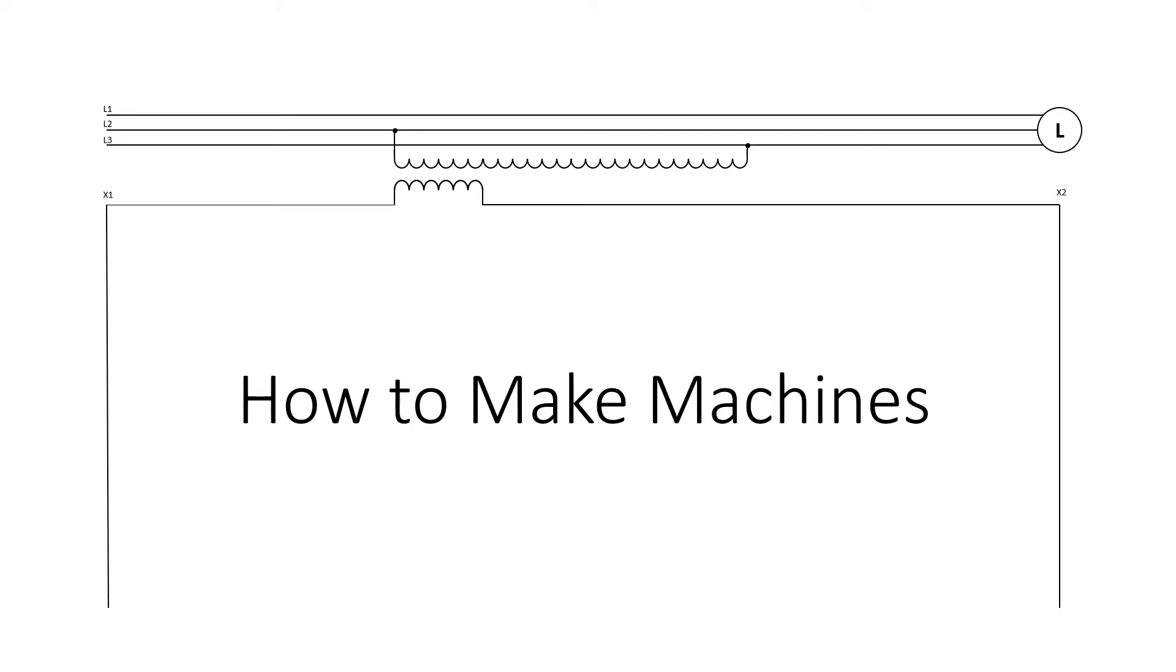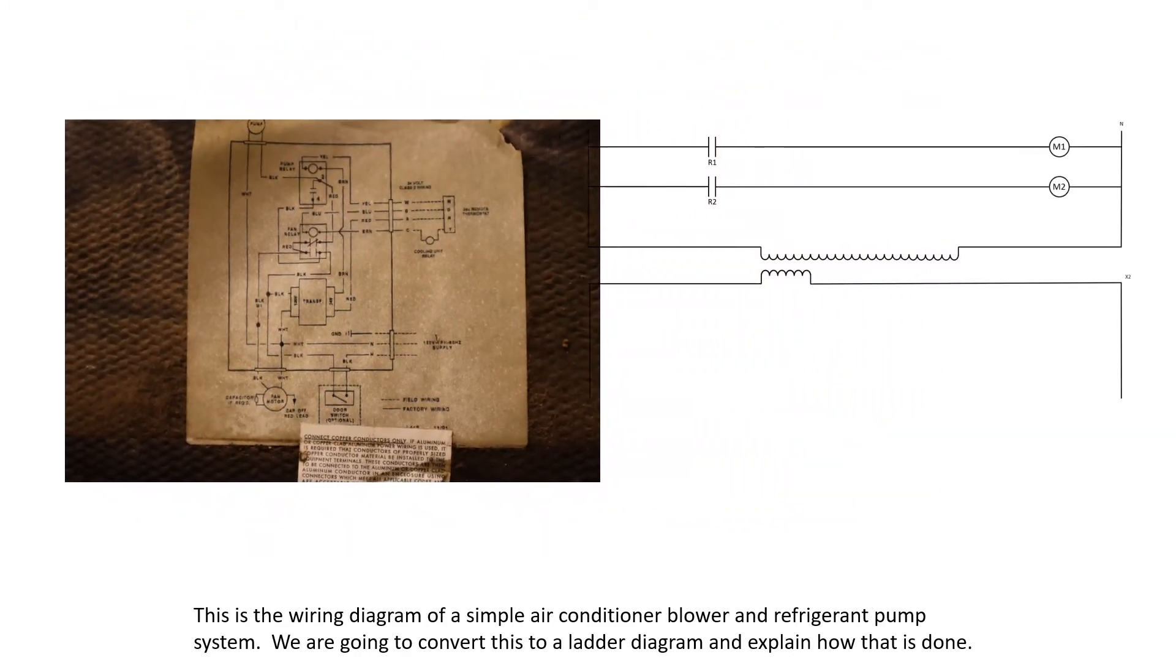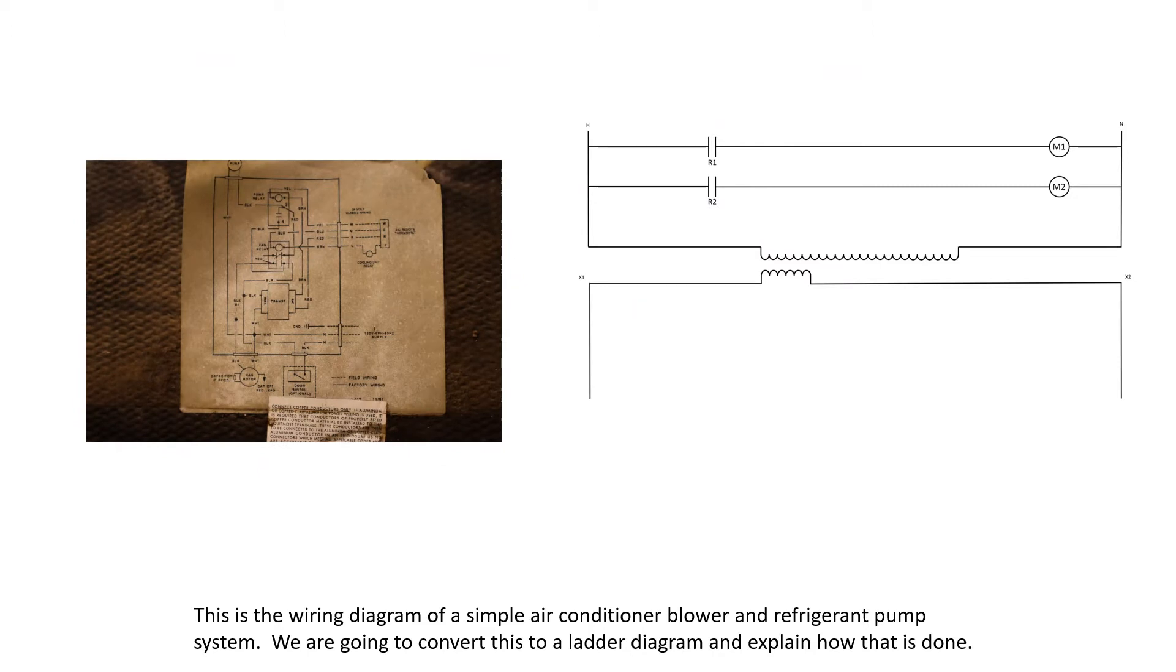Welcome to How to Make Machines. How to Make Machines is an educational resource for electricity, automation, and programming. This is the wiring diagram of a simple air conditioner blower and refrigerant pump system. We are going to convert this to a ladder diagram and explain how that is done.